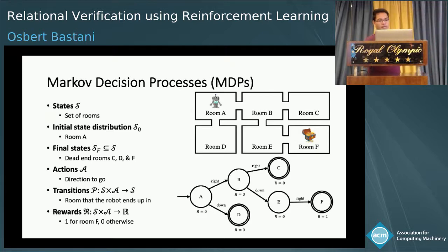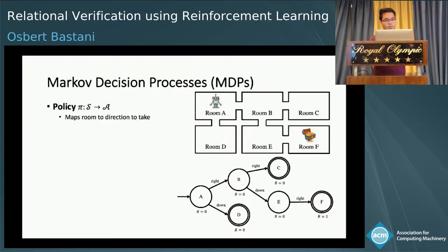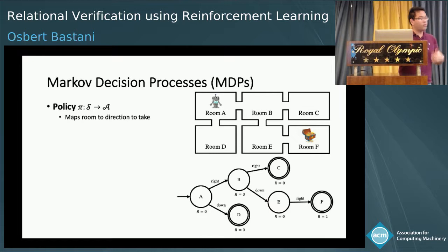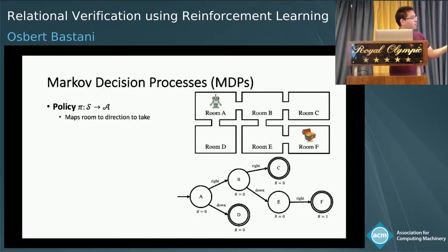The MDP for this toy problem can be pictorially represented using the automaton shown on the bottom right. Our goal is to find a policy for telling the robot what to do in order to get high reward. A policy is just a map from states to actions — for every state, it tells the robot which action it should take. In this example, for a given room, it says which direction the robot should go in.